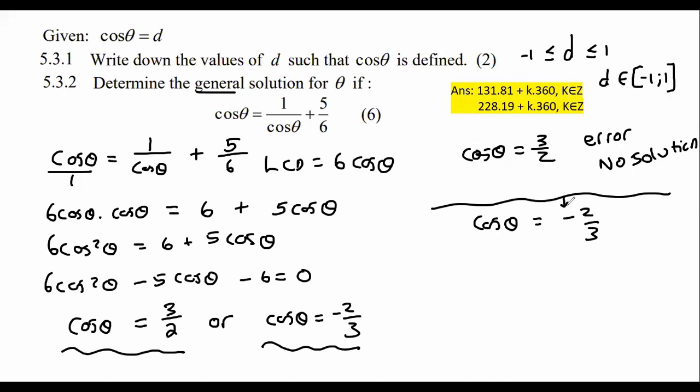Okay, some of you do forget that sometimes we don't put the negative on the calculator. You're just going to type in shift cos 2 over 3, shift cos 2 over 3. And that's going to give us 48.19 degrees. Right. That is our reference angle.